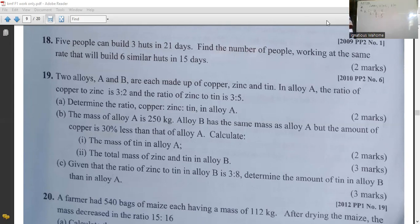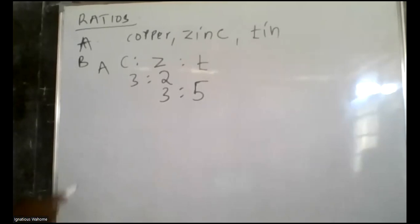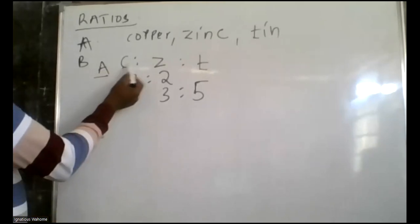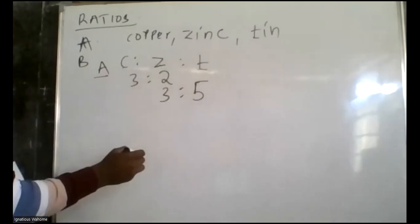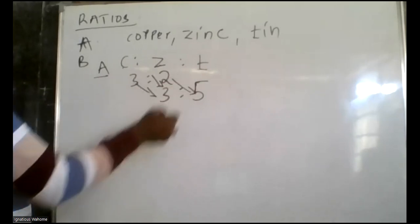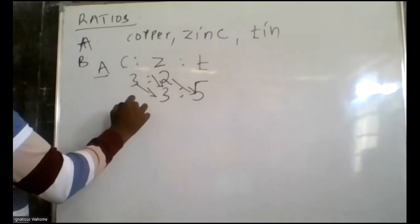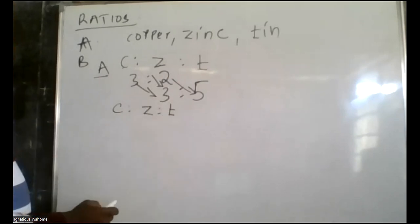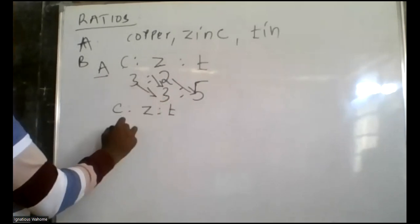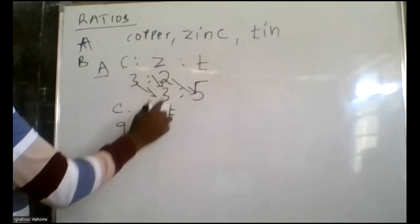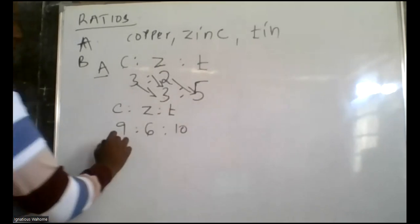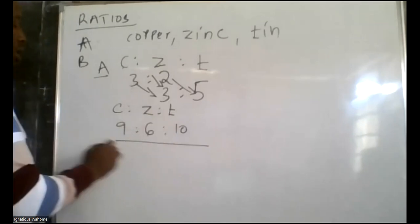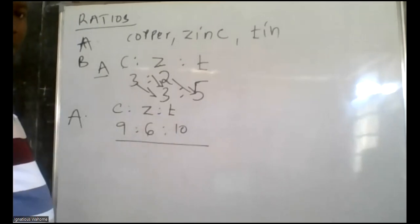Determine the ratio of copper, zinc, and tin in alloy A. The ratio of copper to zinc is 3:2, and zinc to tin is 3:5. To find the combined ratio, multiply through: 3×3=9, 2×3=6, and 2×5=10. So the ratio of copper to zinc to tin in A is 9:6:10.